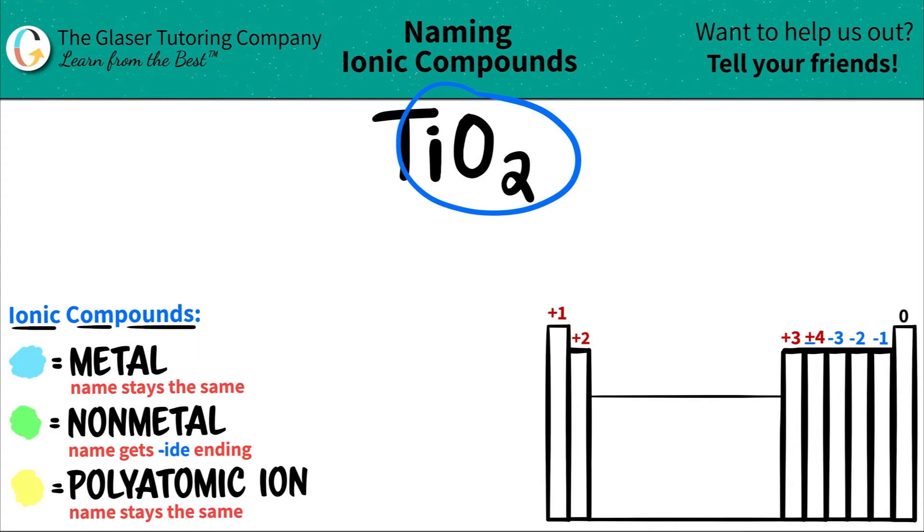Let's plot where these two are on the periodic table to see what we're dealing with. So titanium Ti is right here on the periodic table. It's in this block. And all of this block are called transitional metals. So they're metals. So titanium goes in blue, blue for metal.